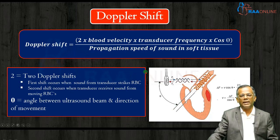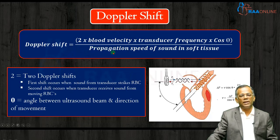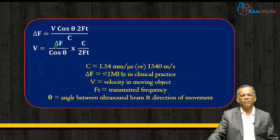We know that propagation speed of sound is a constant, we know the transducer frequency we are using, and we know the cos theta — the angle of incidence. What we do not know is the velocity of blood, which is what we are actually calculating in Doppler echocardiography. Rearranging the equation: velocity equals delta F (the Doppler shift) divided by cos theta, multiplied by the propagation speed of sound, divided by 2 times the transmitted frequency.